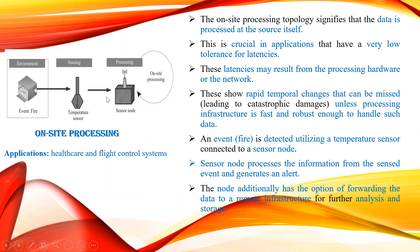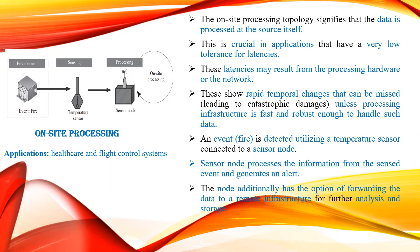Now we will see about on-site processing. Here you have an event of fire where a temperature sensor is sensing and processing it — that is on-site processing. In this architecture, the data is processed at the source itself. When considering crucial applications, they will have low tolerance for latency, maybe a few milliseconds. A fire event is detected, the temperature sensor connected to the sensor node processes the data, and it generates an alarm or alert to the user.